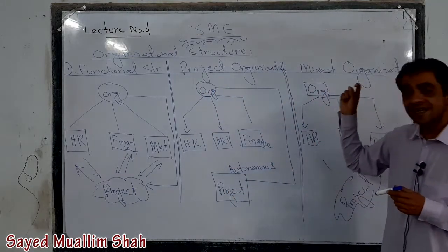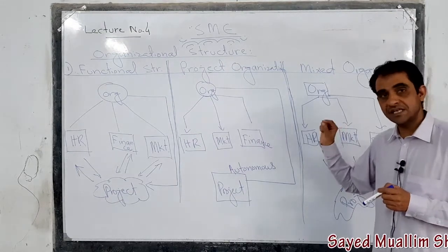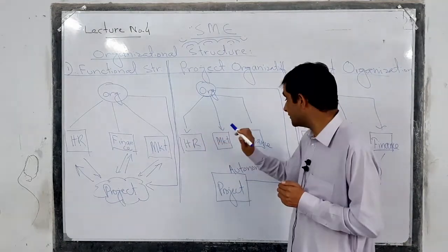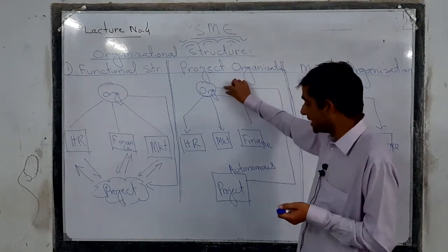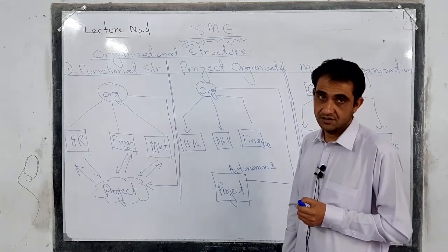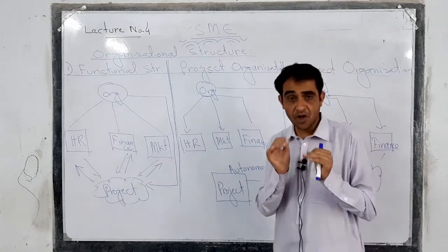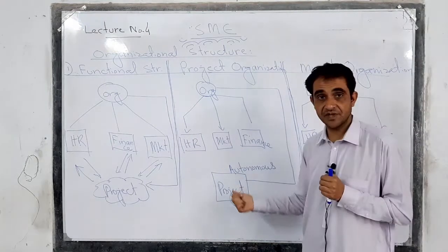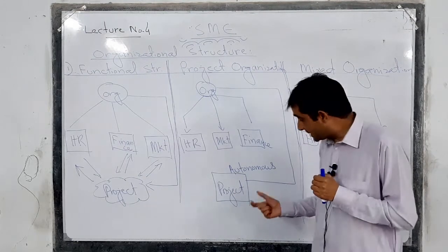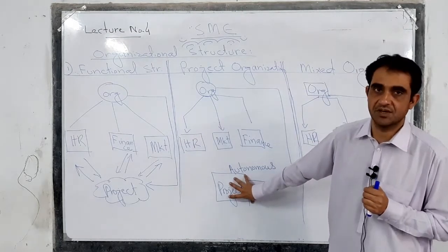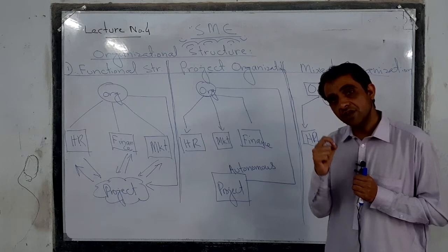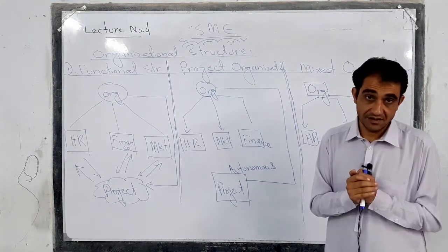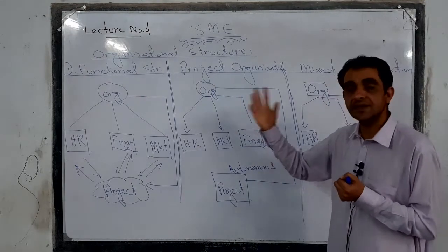Next we have project organization. From its name it is clear that, along with functional departments like HR, marketing, and finance, the organization also has a separate, autonomous department for projects. This project department is not formed by taking employees from other departments. Instead, it is an independent department with its own manager, its own employees, and its own specific budget.